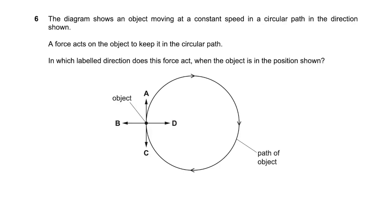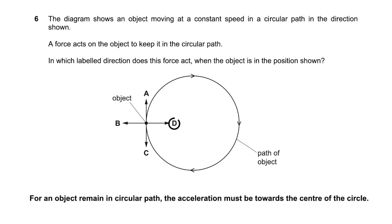The diagram shows an object moving at constant speed in a circular path. A force acts on the object to keep it in the circular path. In which direction does this force act? For an object to remain in a circular path, the acceleration — and therefore the force — must point towards the center of the circle. This is analogous to planetary motion: the Sun's gravitational force keeps Earth in its circular orbit.